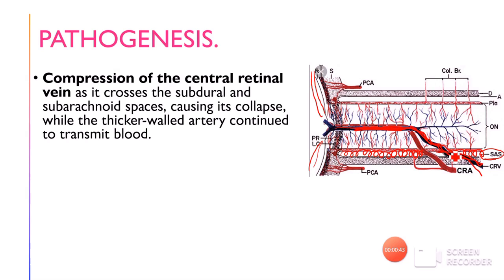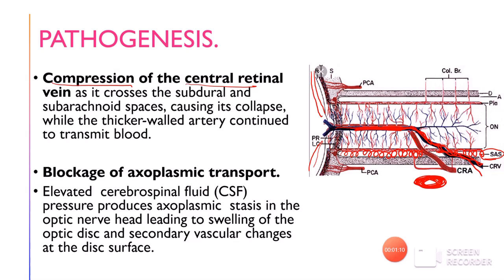The central retinal artery, however, has much thicker adventitia and will not be compressed by increased ICP. The increased intracranial pressure only affects the central retinal vein. The second theory is blockage of axoplasmic transport. The nerve fiber layer passes through the lamina cribrosa to form the optic nerve, and when ICP increases it transfers pressure to the subarachnoid space, causing direct pressure on the axons and blockage of axoplasmic transport.